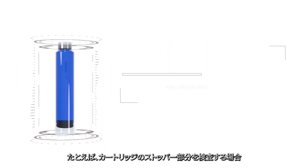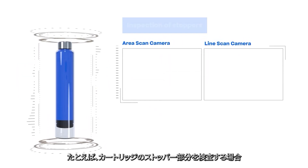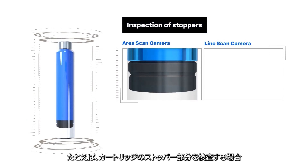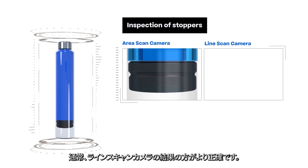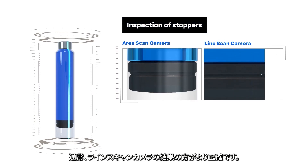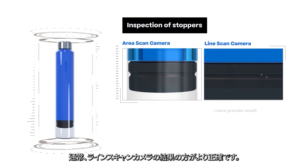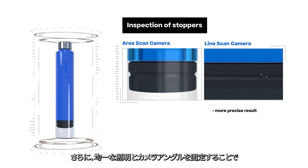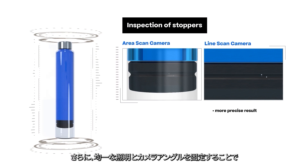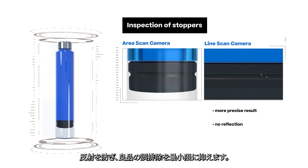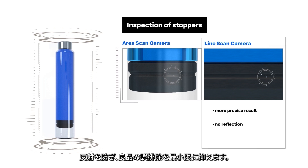When inspecting the stopper area of cartridges, for example, the results of a line scan camera are usually more precise. In addition, homogeneous illumination and a fixed camera angle prevent reflections and minimize false rejections.